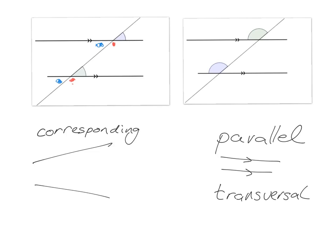A way people say you can recognise corresponding angles — a nice fun way — is to say that you can always see an F with them. They're tucked into the same place on the F. So if you draw this F, this capital letter F, your corresponding angles are in the same place. In this case here, you will still have that F — it's just going to be an upside down F — and you've got your corresponding angles in the same place on this one.